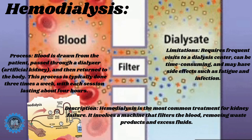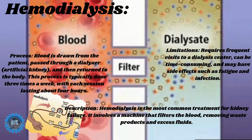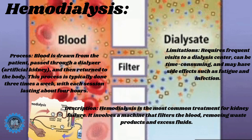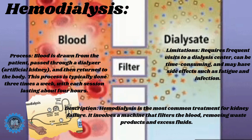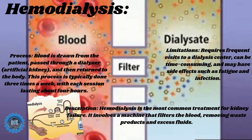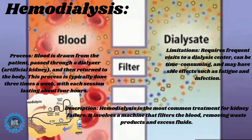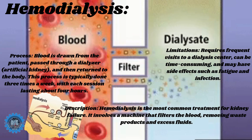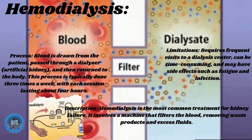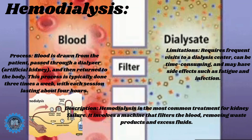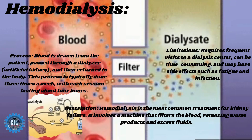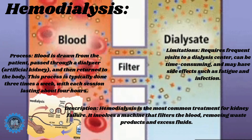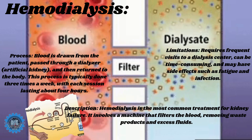There are several approaches to artificial kidneys. First, hemodialysis: hemodialysis is the most common treatment for kidney failure. It involves a machine that filters the blood, removing waste products and excess fluid. Blood is drawn from the patient, passed through a dialysis machine, and then returned to the body. This process is typically done three times a week, with each session lasting about four hours. Limitations include frequent visits to a dialysis center, which can be time-consuming, and may have side effects such as fatigue and infection.